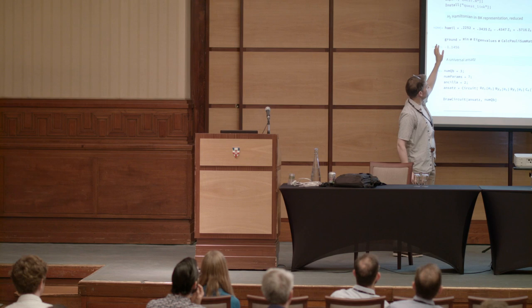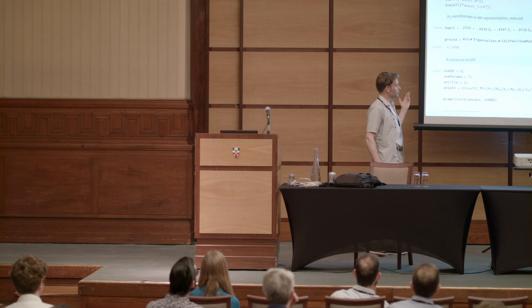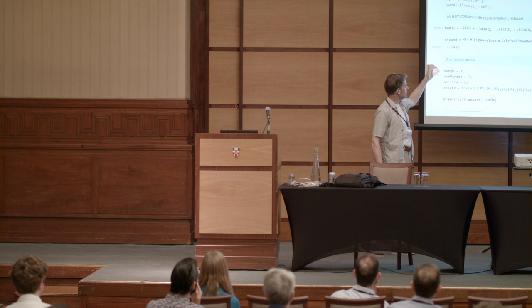Here, I set up a Hamiltonian in the most intuitive way possible, just listing the strengths of the terms and just writing the terms in the natural notation. Z zero meaning a Pauli Z operating on qubit zero. Our qubits start from zero and go one, two, three. And then, more interestingly still, here, when we actually want to set up our circuit, it's again a super intuitive, symbolic way of doing it.